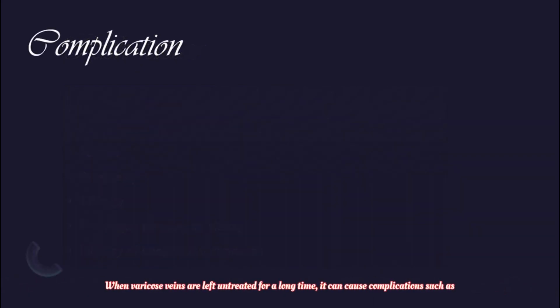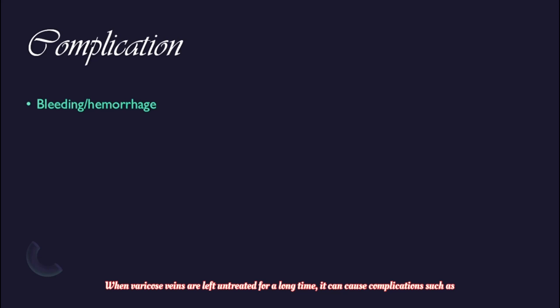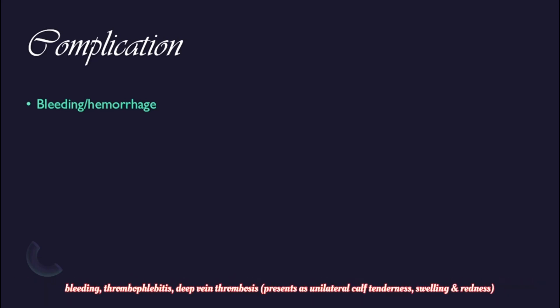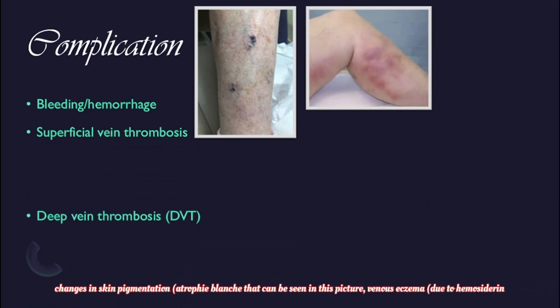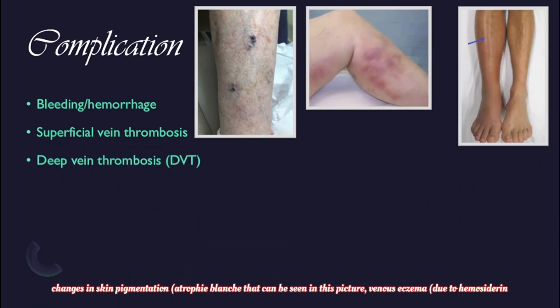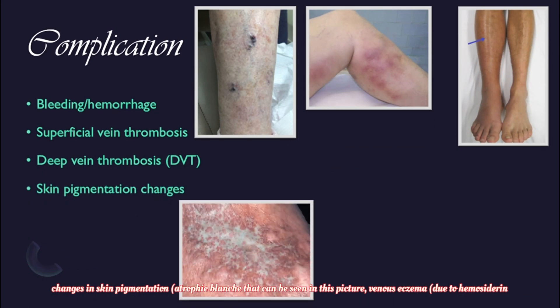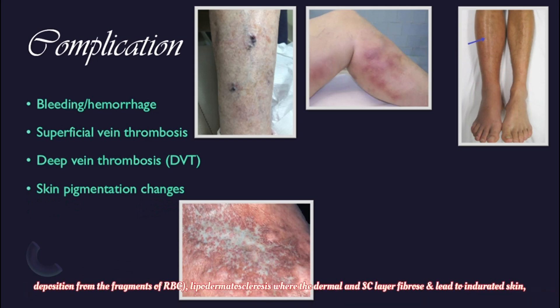When varicose veins are left untreated for a very long time, they can cause complications such as bleeding, thrombophlebitis (inflammation of the vein), deep vein thrombosis presenting as unilateral calf tenderness, swelling and redness, changes in skin pigmentation such as atrophie blanche as seen in the picture, and venous eczema due to haemosiderin deposition from fragments of broken red blood cells.